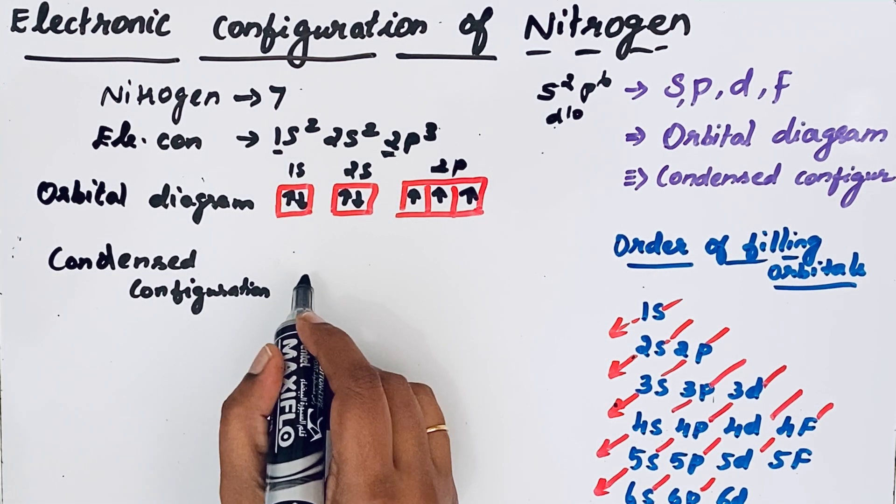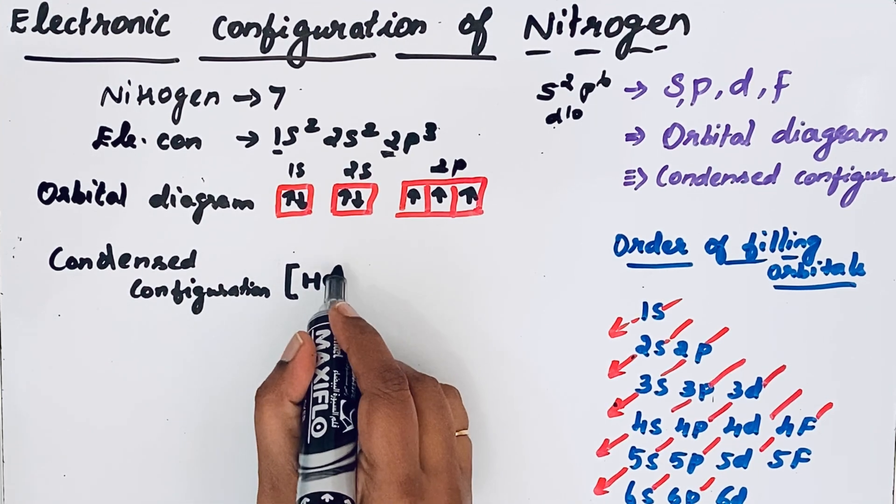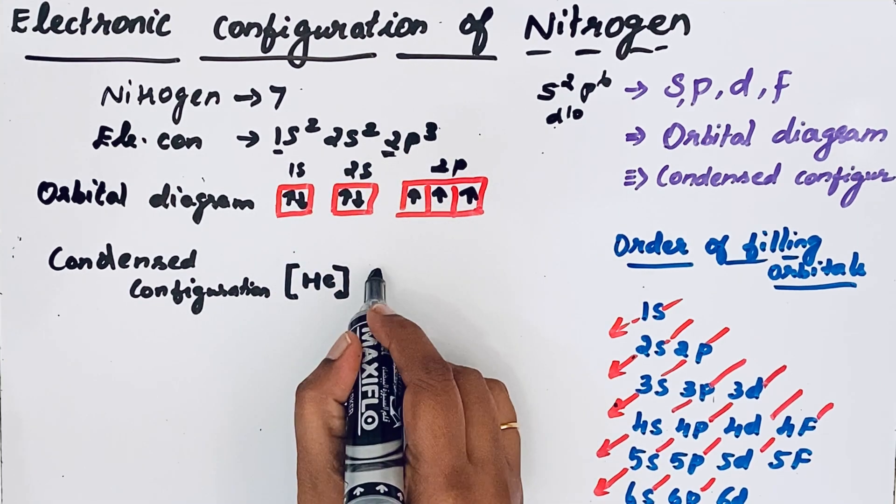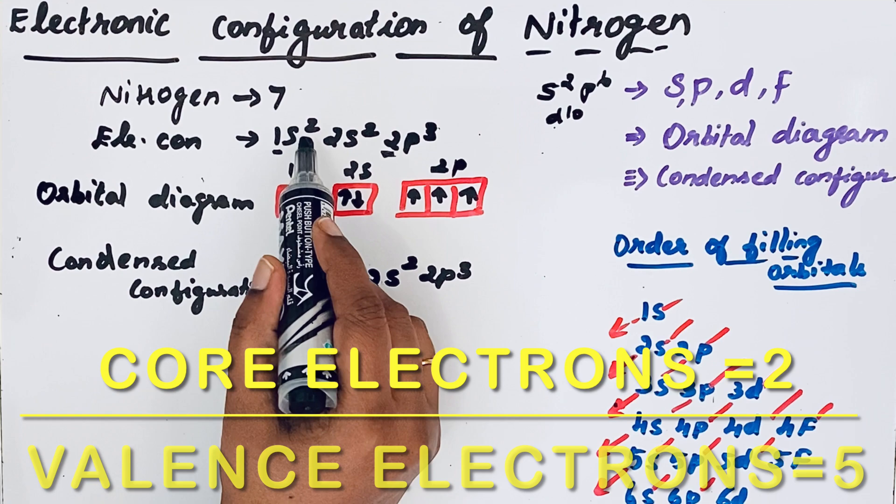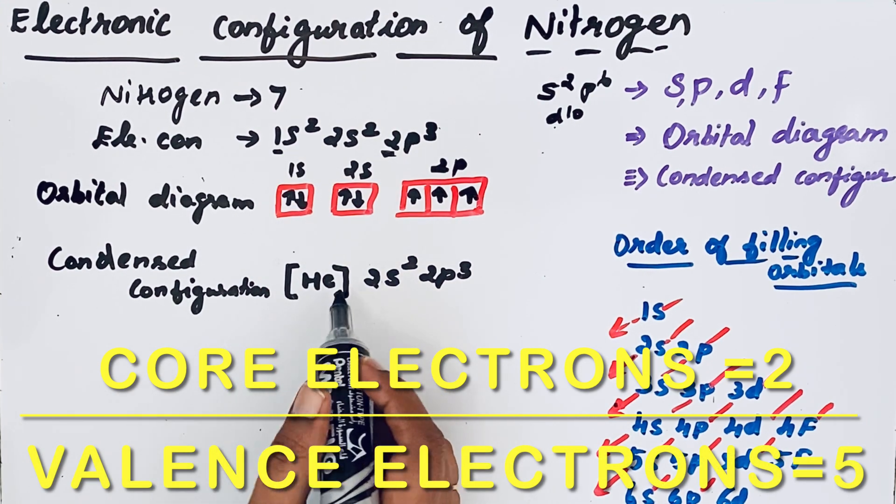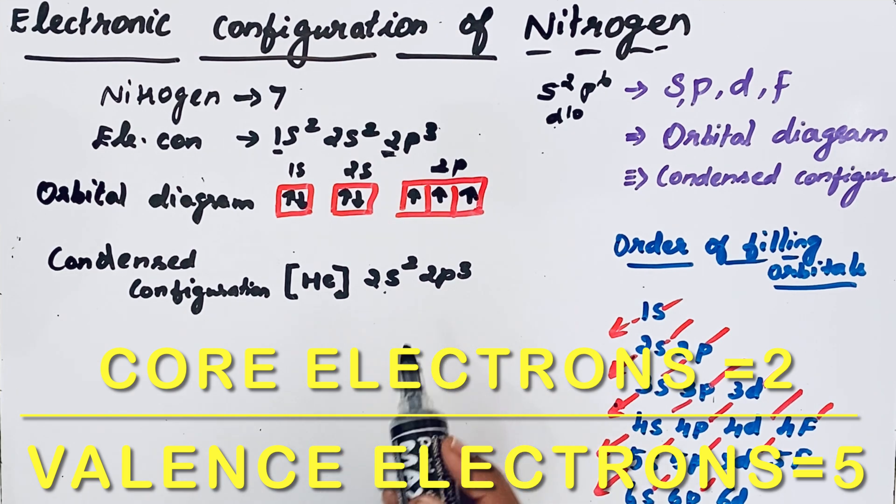So we are writing helium here. When you are writing, we write inside the bracket helium. The remaining 2s2 2p3 we are writing as such only. This electron, that means 1s2, 2 electrons are called core electrons, and the remaining electrons 2s2 2p3 are called valence electrons.